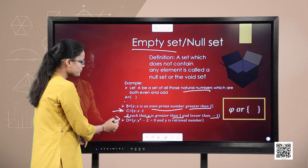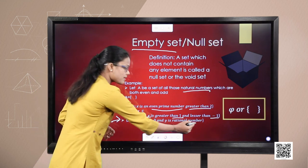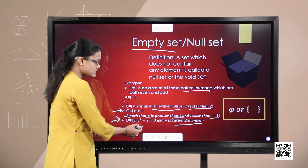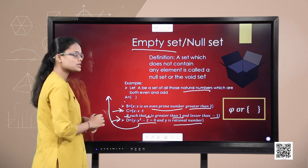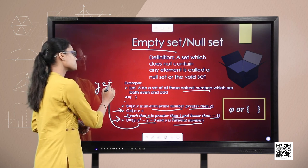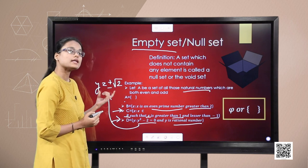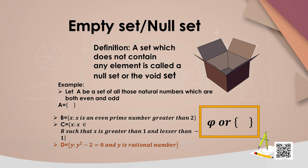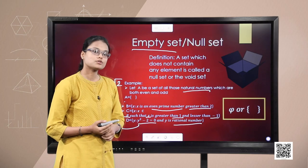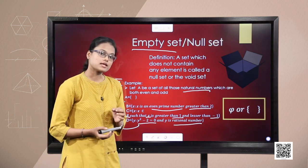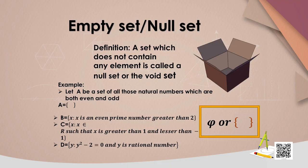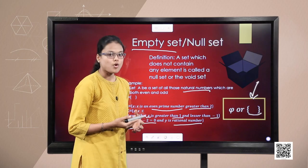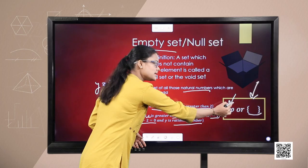The last set D consists of all those rational solutions of the equation y squared minus 2 equals 0. On solving it, the solution is y equals plus or minus root 2, which is an irrational solution. So D becomes an empty set. Students, note that whenever we represent an empty set, we use curly brackets with no element in it, or the symbol phi.